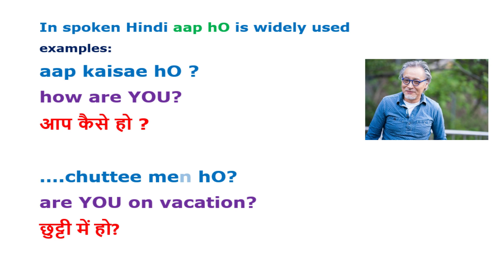Just imagine you want to ask that elderly person: aap kaise ho. That is fine to say instead of aap kaise hai, because you know him quite well. And it is not just about knowing a person — nowadays it is becoming more and more common to use aap ho.